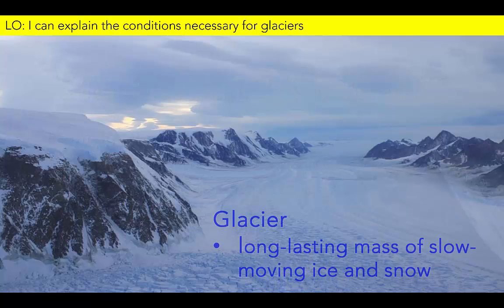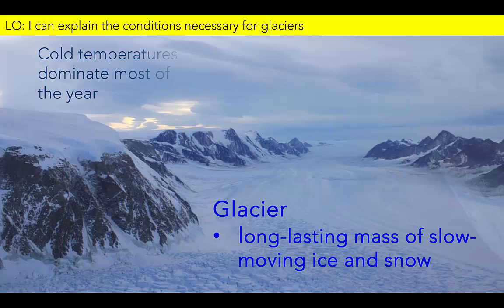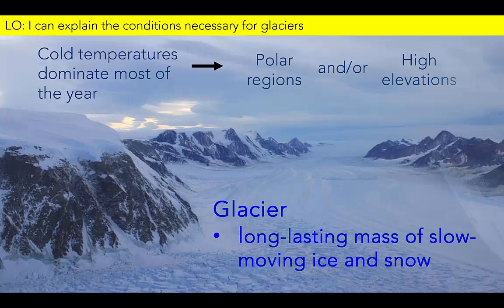A glacier is a long-lasting mass of slow-moving ice and snow. For a glacier to form, we need an environment where cold temperatures dominate for most of the year. Consequently, most glaciers are either found in polar regions or at high elevations on the continents.